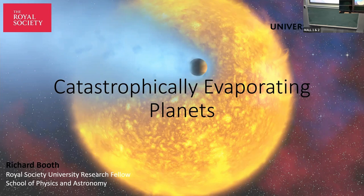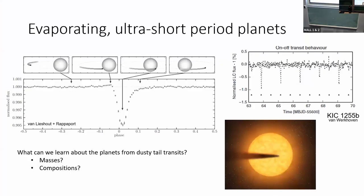So we're talking about planets that are super close to their star. Why are we interested in these things? The reason they became interesting was because we found some. What I'm showing here is an average light curve of this object, KIC 1255B. It's got about five other names as well, which is a light curve measured from the Kepler satellite.